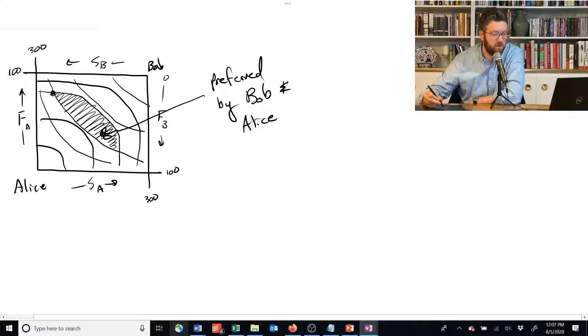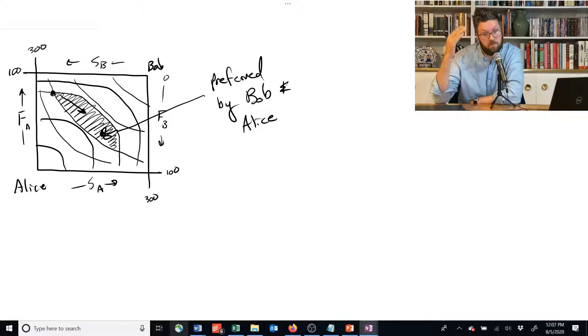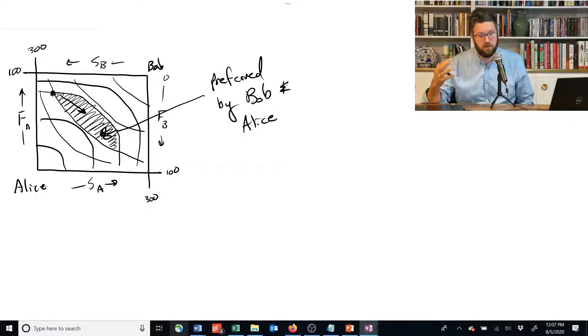So this region is preferred by both Bob and Alice. So if they are willing to trade and exchange goods and move somewhere in the middle there, that basically means Alice giving up some of her big supply of food in exchange for some of Bob's shelter, and Bob giving up some of his shelter in exchange for some of Alice's food and having a more equal outcome, they're both happier there.